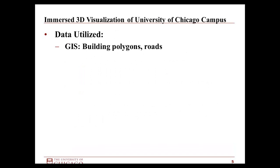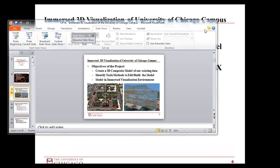For the data that we utilized, this pretty much runs all the way across the board. We had some GIS building data, road data, the city of Chicago building database which we got through Cook County, as well as some polygon building data that we generated. We had a BIM detailed building drawing, so we had some BIM models that we were utilizing as part of the modeling effort.